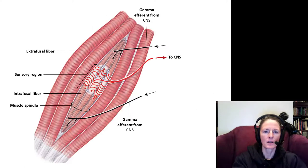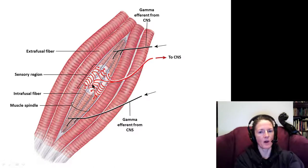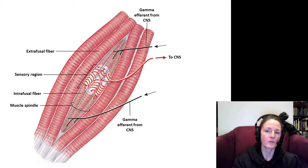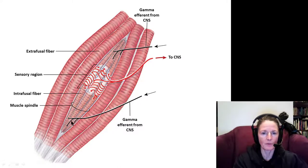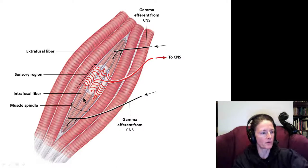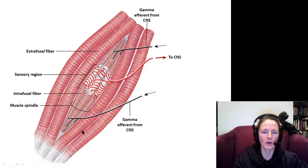The intrafusal fibers sense stretch, while the surrounding extrafusal muscle fibers cause the actual muscle contraction and maintain muscle tone. The intrafusal fibers also have a special type of motor neuron called a gamma efferent, or gamma motor neuron. These constantly adjust the length of the intrafusal fibers, providing ongoing information about how much the muscle is stretched, so the muscle always knows exactly how much force to apply to counteract any stretch.